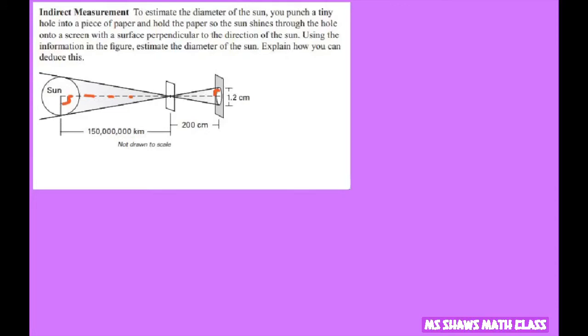So by the angle angle similarity postulate, we can set up a proportion because we can say that two triangles are similar. And so we're going to set up the proportion.